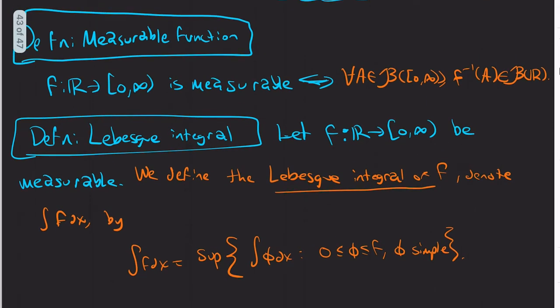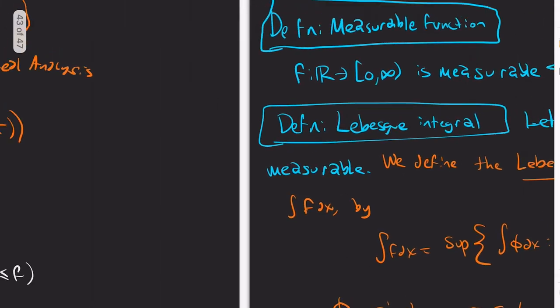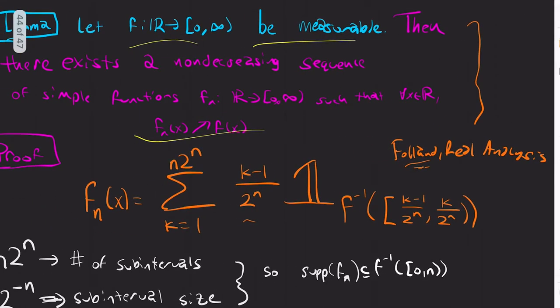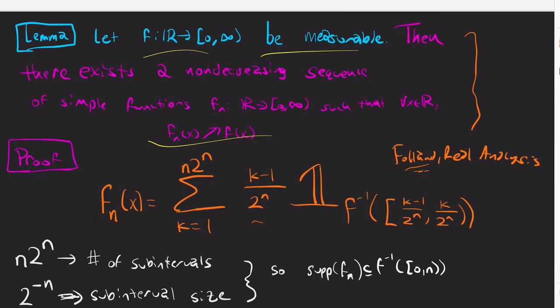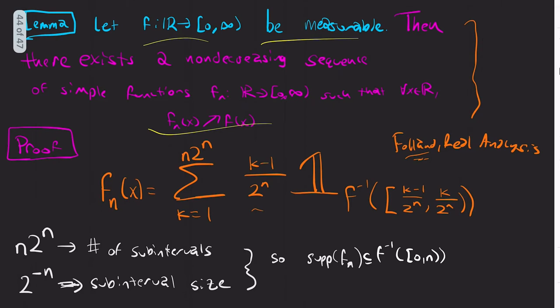Now that we've defined the Lebesgue integral, this is what I'd like to show you. So this is a very thematic proof, so really try to internalize this. And it's also a major result in and of itself. So it's a super useful tool. From now on you can pretty much say let phi_n be a sequence of simple functions that converges to f and increases. So f is measurable is my only assumption.